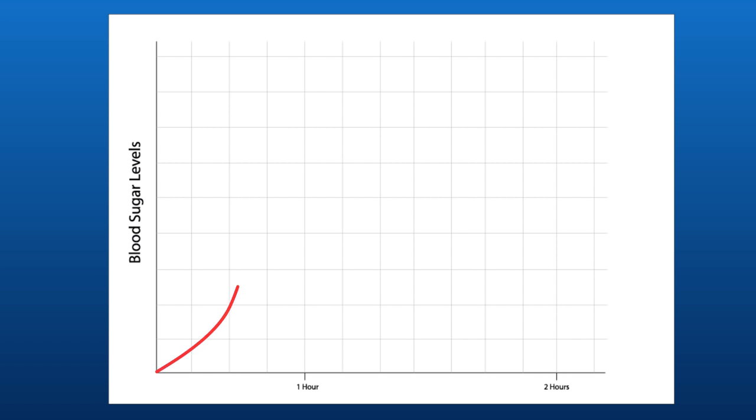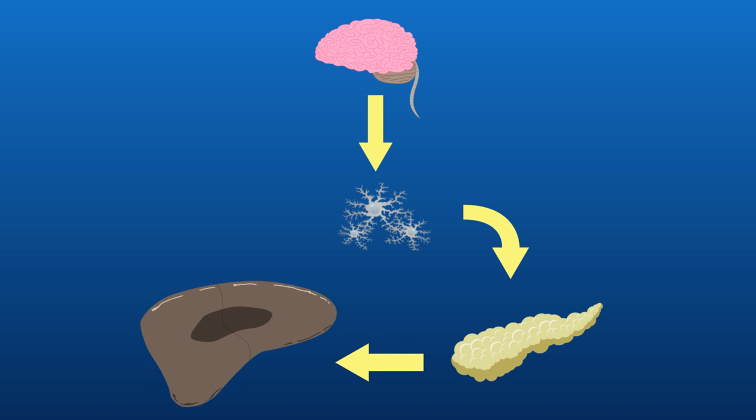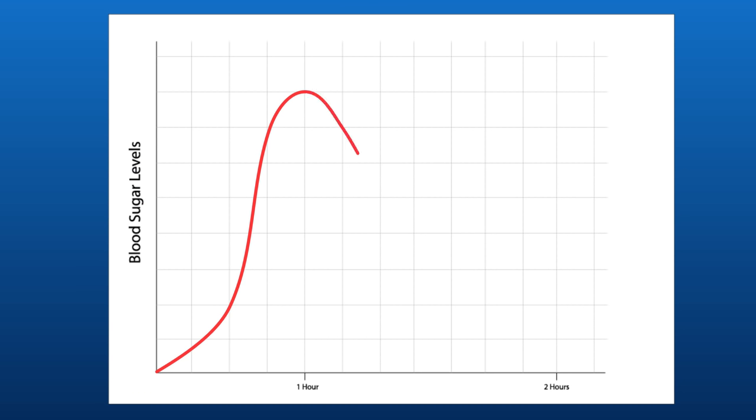For example, after you eat a meal, your blood sugar level increases. You can see it on this graph. This is detected and the pancreas will release a hormone called insulin that causes the sugar to be stored in the liver. Therefore, as you can see on the graph, the blood sugar level returns to normal.